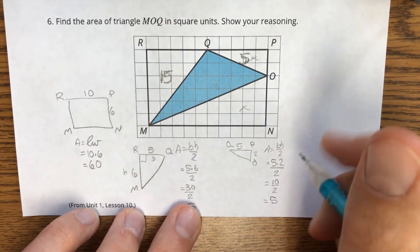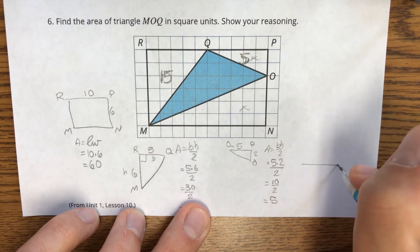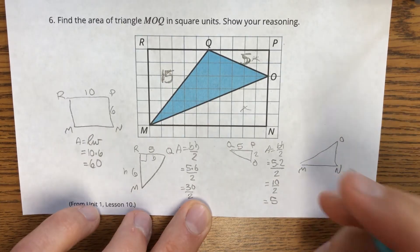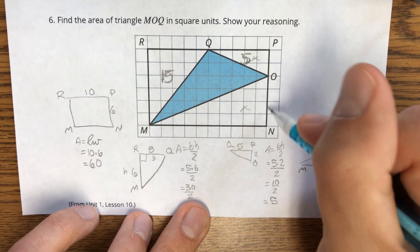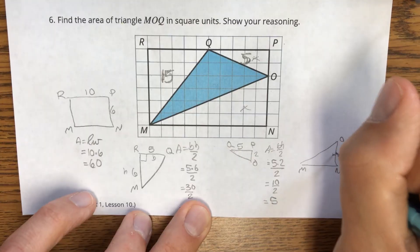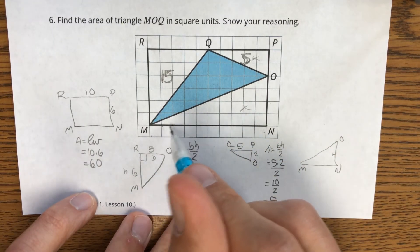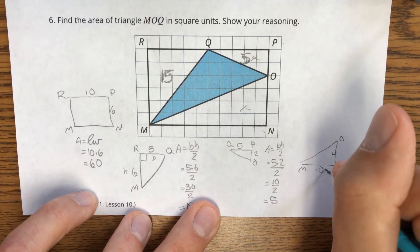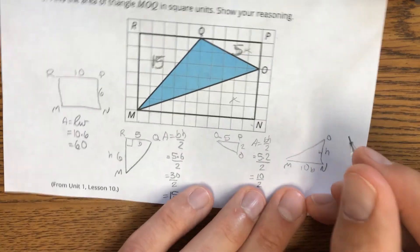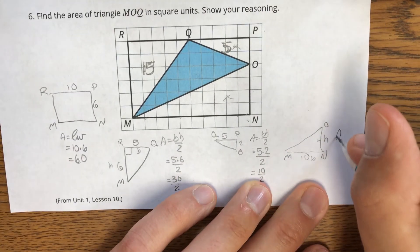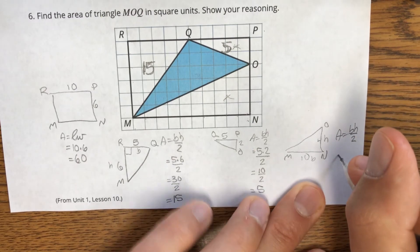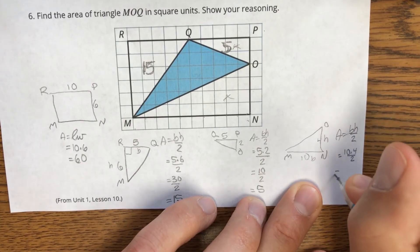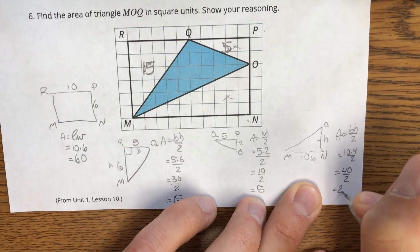What about the large triangle down here? This is M, N, O. Well, O to N, one, two, three, four. M to N, one, two, three, four, five, six, seven, eight, nine, ten. So base of 10, a height of four. And once again, area for a triangle is base times height divided by two. That will be 10 times four divided by two. 40 divided by two is 20.